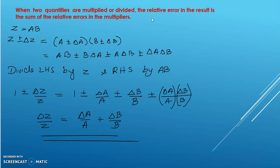So the relative error delta Z by Z equals delta A by A plus delta B by B. This is our result. Division follows the same method — the error is also delta A by A plus delta B by B.